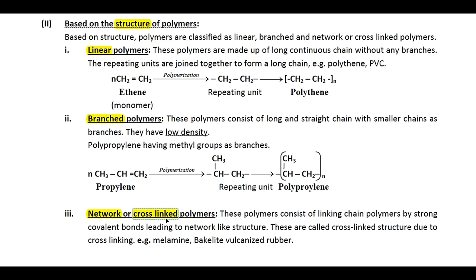Then we have network or cross-linked polymers. These polymers consist of linking chain polymers by strong covalent bonds, leading to a network-like structure. They are called cross-linked structures due to cross-linking. Examples include melamine, bakelite, and vulcanized rubber. A network polymer can be visualized as two linear chains parallel to each other, joined together in between by some groups or linkages. We will visualize the structure in the later part.